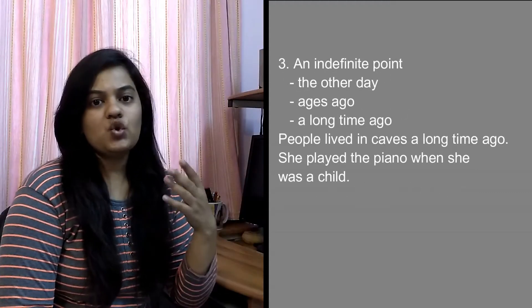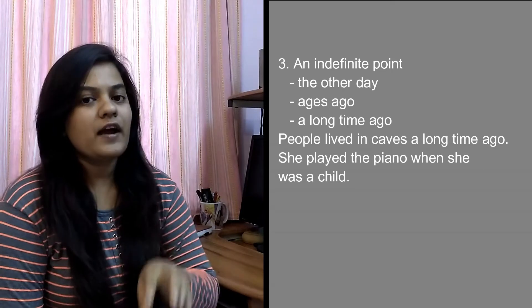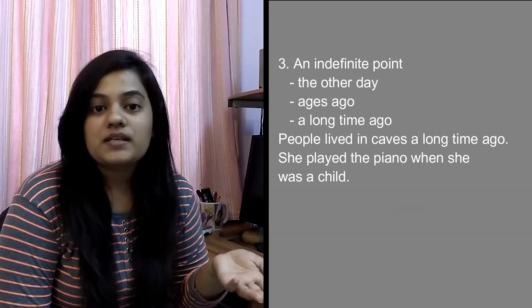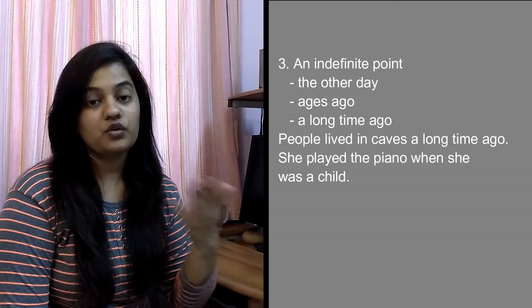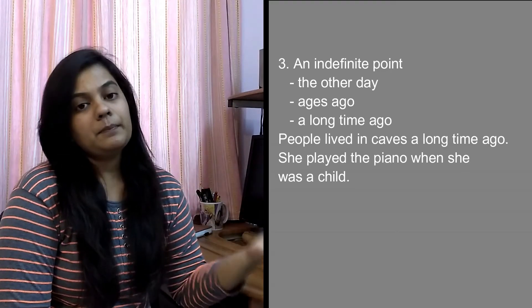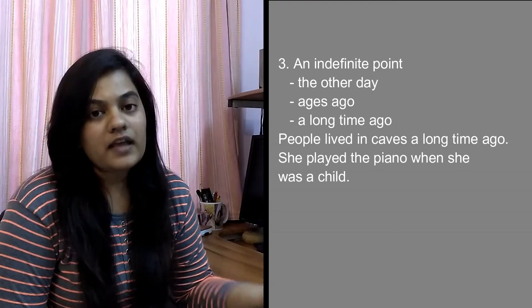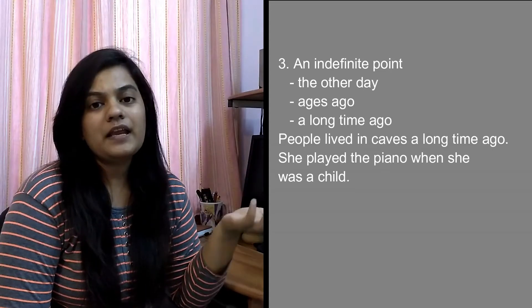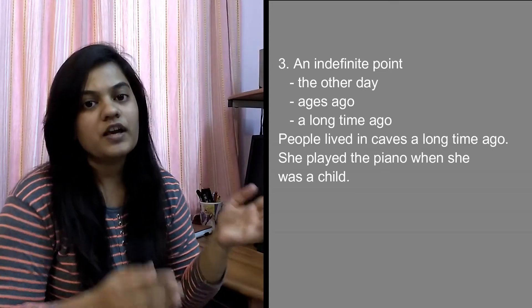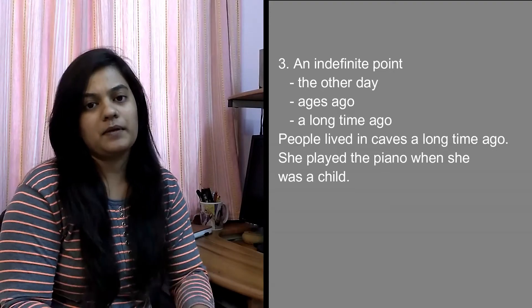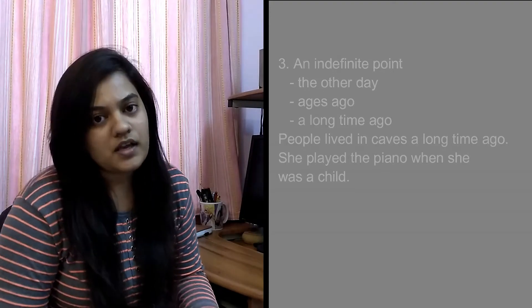Three is an indefinite point — in the sense you aren't able to specify the time period. For example, it could be centuries ago, ages ago, or long ago. For example, people lived in caves long ago, or she played piano when she was a child. So we are not specifying at what age, but she used to play piano when she was a child. This was about simple past tense.